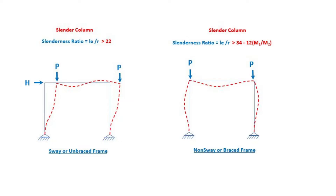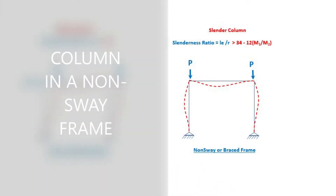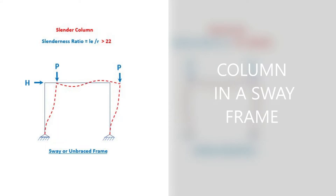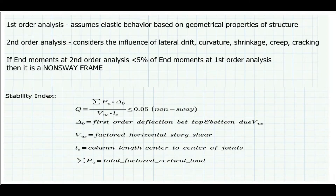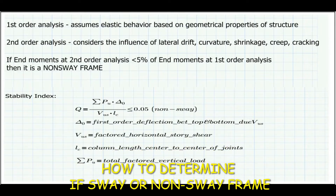Aside from determining the slenderness ratio of a column, we also need to find out if the column is in a sway frame or in a non-sway frame. A column in a non-sway frame means it's laterally braced against sidesway — there is a bracing member, for example a shear wall, that prevents the frame or column from swaying. If the column is in a sway frame, it's not braced against sidesway and we need to account for transverse loads. We can determine this using calculation: if the second-order moments are less than 5% of the first-order moments, it's a non-sway frame. We can also use the stability index formula — if it's less than or equal to 0.05, it's a non-sway frame.